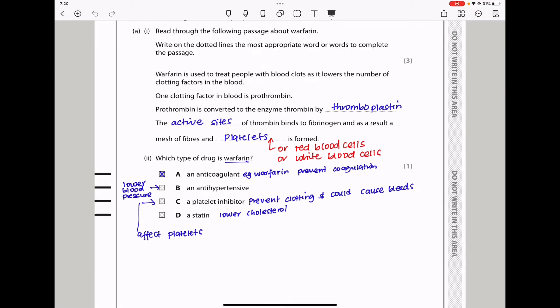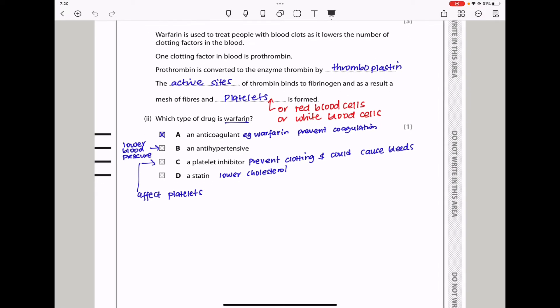Part B says which type of drug is warfarin. Warfarin is an anticoagulant because it prevents coagulation of blood. Of course, we know that. You should know that antihypertensives are involved in lowering blood pressure, while statins are involved in lowering cholesterol. So the answer here should be A. It is an anticoagulant.